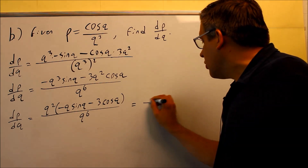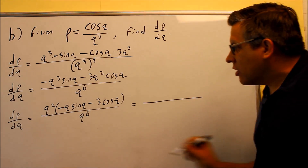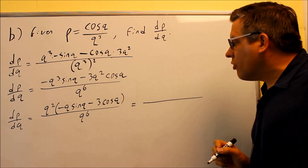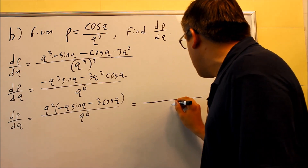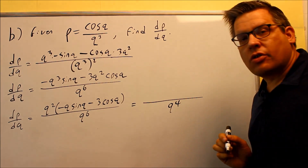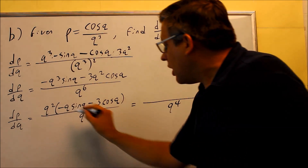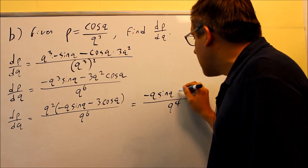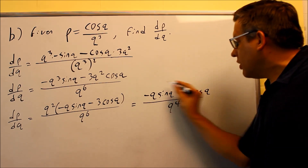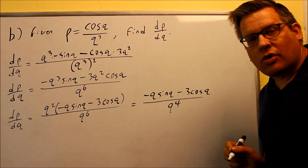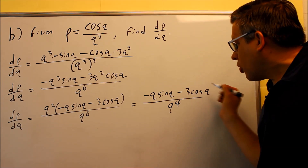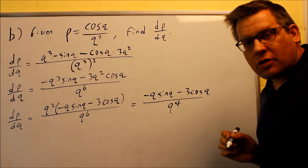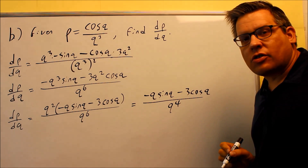The last thing you can do is cross-cancel: cancel the Q squared on top with Q to the sixth on the bottom. That gives you a fourth power on the bottom because you're subtracting exponents. On top you're left with what was inside the parentheses. That's as far as you can go — you're not allowed to cancel the Q's inside the trig functions, so that's your final answer.